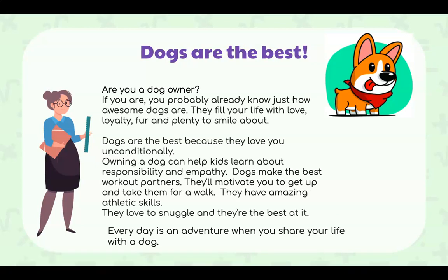After my brainstorm, I am going to start my opinion writing. I will start by asking a question: 'Are you a dog owner?' Then I answer my own question, stating my opinion: 'If you are, you probably already know just how awesome dogs are.' I back that up with a reason: 'They fill your life with love, loyalty, fun and plenty to smile about.' In my second paragraph I combine my other reasons — dogs love you unconditionally, owning a dog helps kids learn about responsibility and empathy, dogs make the best workout partners, they motivate you to get up and take them for a walk, they have amazing athletic skills, they love to snuggle, and every day is an adventure when you share your life with a dog. In my ending I simply state my opinion one last time.